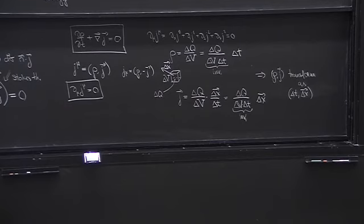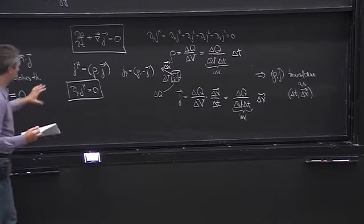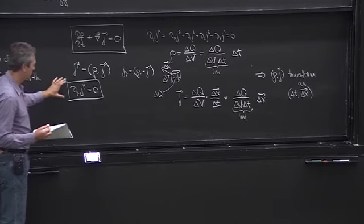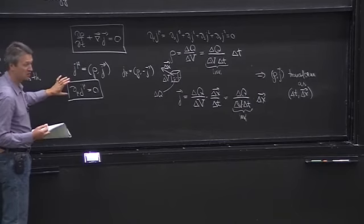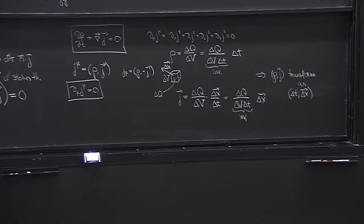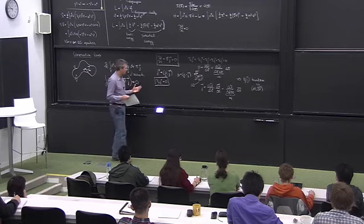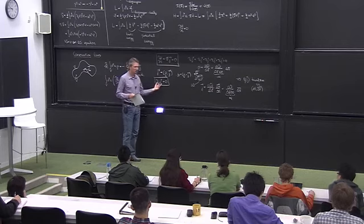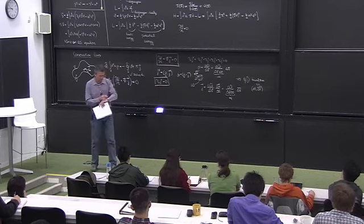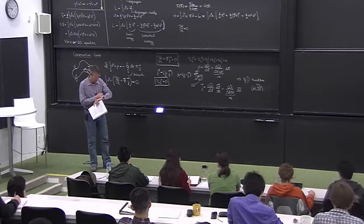To conclude: conservation laws can always be written as ∂_mu J^mu = 0, and the next goal will be to understand how — looking at the field equations or at the action — we can see what conservation laws are present in the system. Let us take a break for about three minutes.